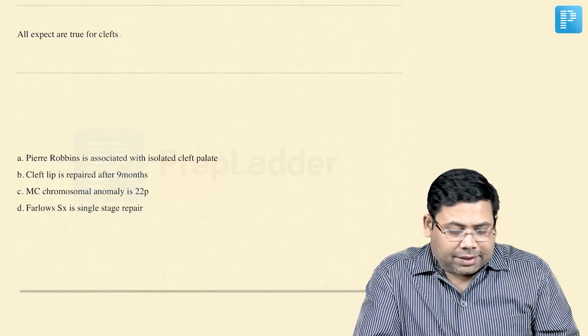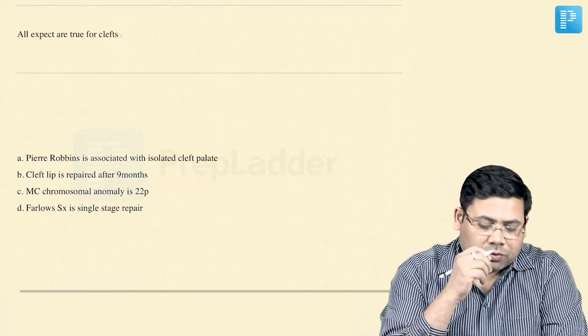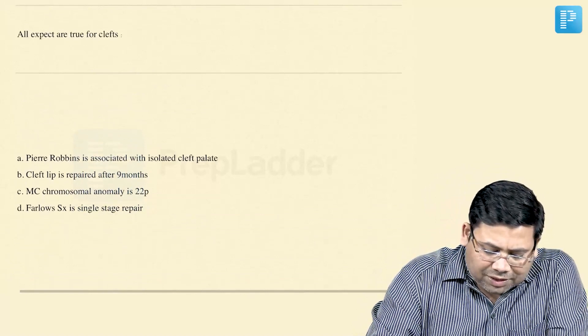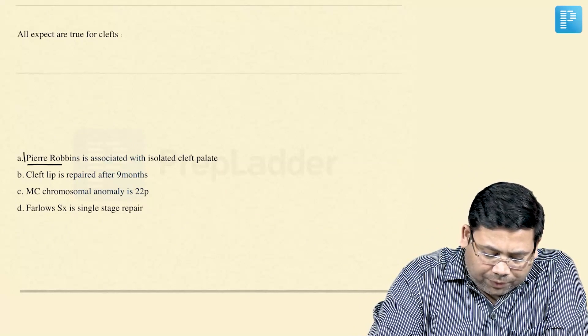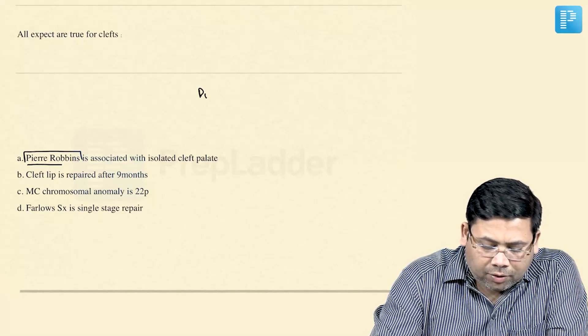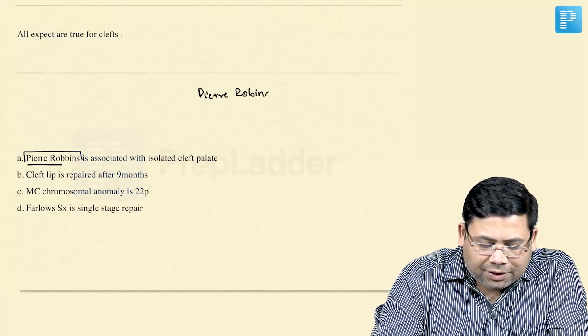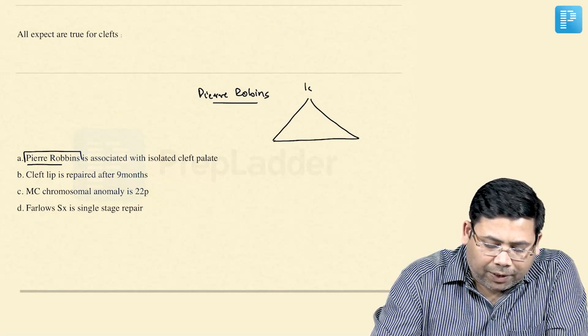Next, we have all except are true for the clefts of the lips. Let us talk about the cleft lip and cleft palate. This is a very easy question. If you talk about Pierre-Robbins syndrome, Pierre-Robbins is a condition where you get to see an isolated cleft palate.